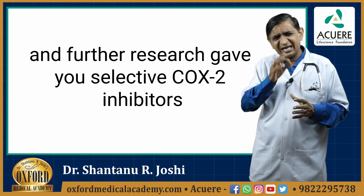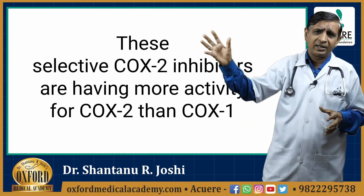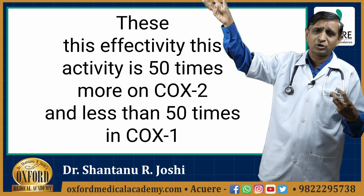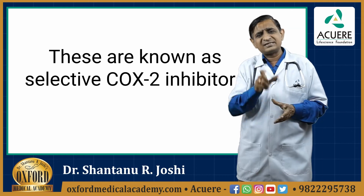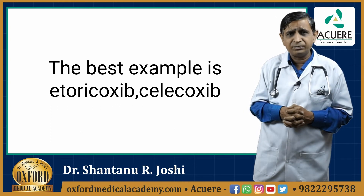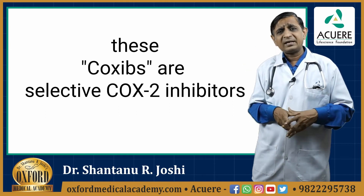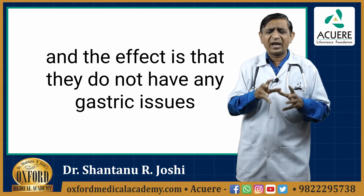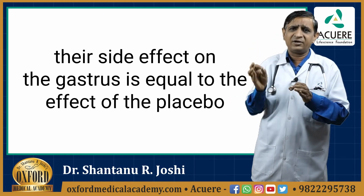Further research gave us selective COX-2 inhibitors. These selective COX-2 inhibitors have more than 50 times greater activity on COX-2 compared to COX-1. The suffix '-coxib' is used to denote these drugs. The best examples are etoricoxib and celecoxib. These coxibs selectively inhibit COX-2 and have a negligible effect on COX-1, so they do not cause gastric issues — their side effect on gastric stress is equal to that of a placebo.